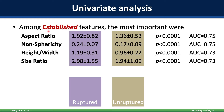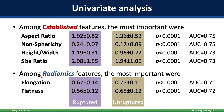Taking a look at the univariate analysis — the Student's t-test for association with rupture status — among established features the top two area under the curves for rupture status discrimination were a tie: aspect ratio and non-sphericity at 0.75, and then height-width ratio and size ratio at 0.73. Among radiomics features, the top two AUCs were elongation and flatness, coming in at 0.71 and 0.72. Notice these top two AUCs for radiomics features are less than the top two AUCs for established features.